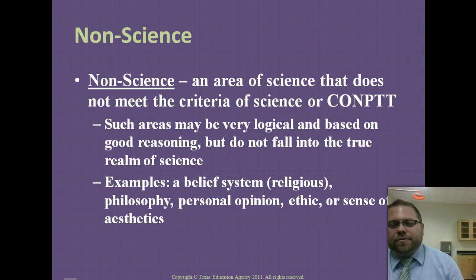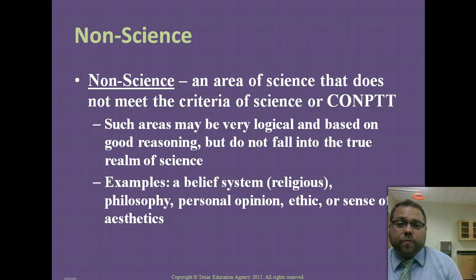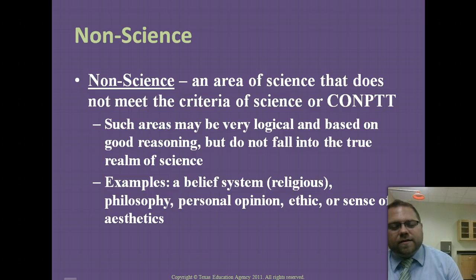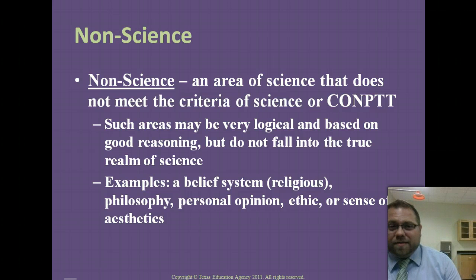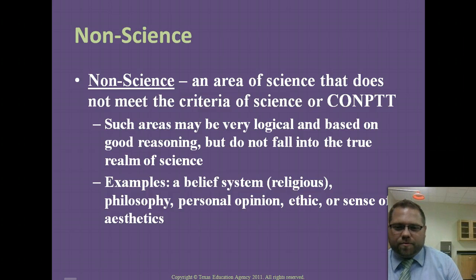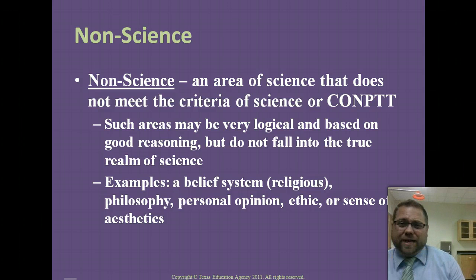Non-science refers to things that do not necessarily meet that criteria. Take religion — it deals with the supernatural, and since science is only about the natural world, it can't be tested using the scientific method. Science can be within it, but you can't define it using scientific terms. Similarly, philosophy, and there's also the difference between astronomy and astrology: one is the science of celestial bodies, the other tries to predict the outcomes of life using the arrangements of the stars.